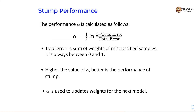Let's see how the weights are calculated for misclassified points. We first calculate the performance of the stump and call it alpha. It is calculated as: alpha = (1/2) * ln((1 - total_error) / total_error). The total error is the sum of weights of misclassified samples in the previous round and is always between 0 and 1. A higher value of alpha means better performance of the stump.